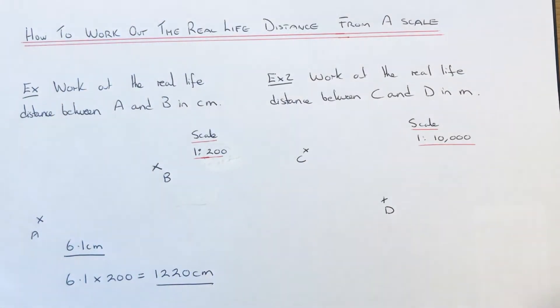Let's have a look at our second example. We've got to work out the real-life distance between C and D and give our answer in meters. The scale on the map this time is 1 to 10,000.